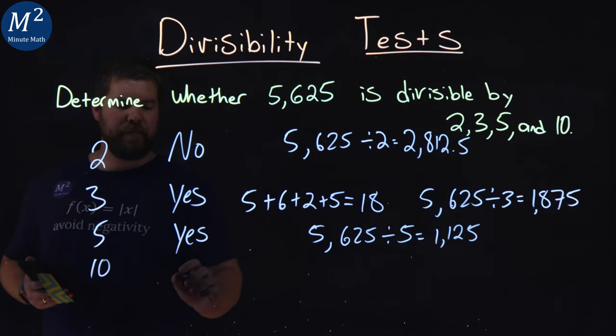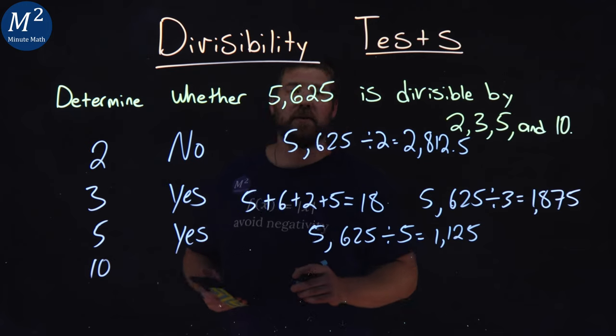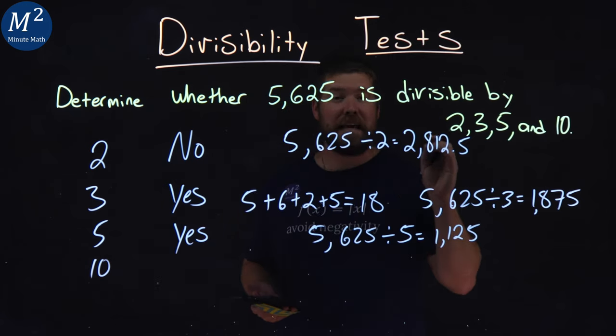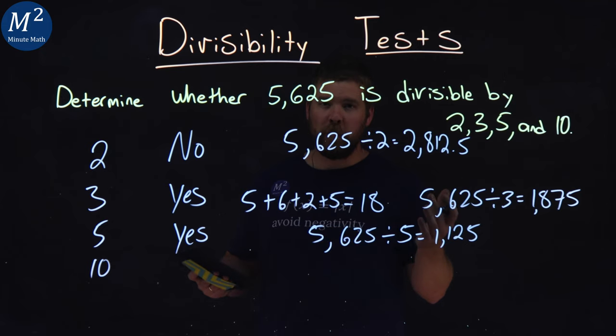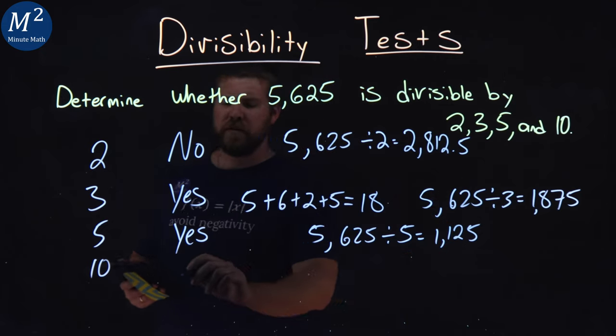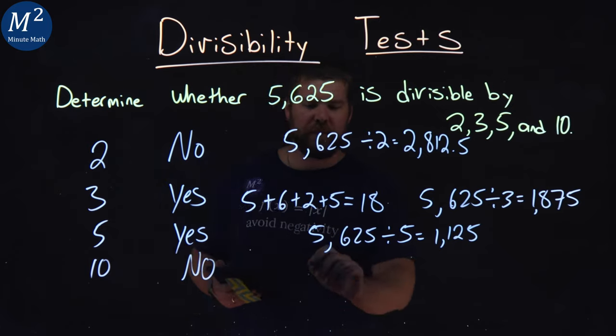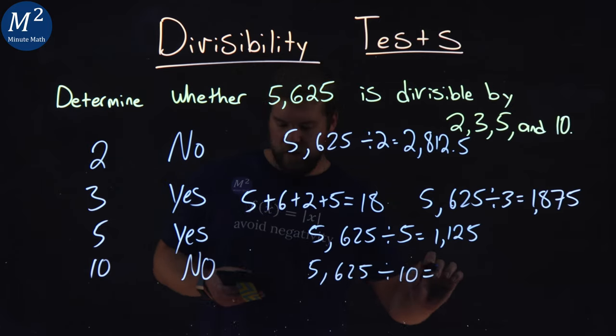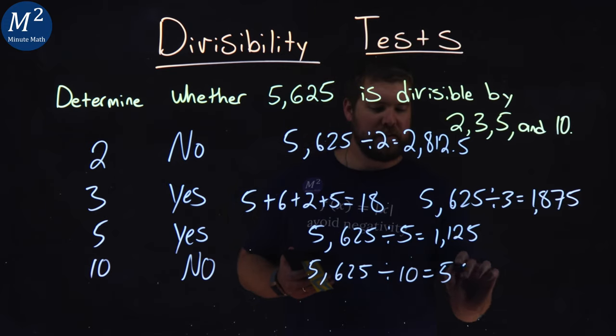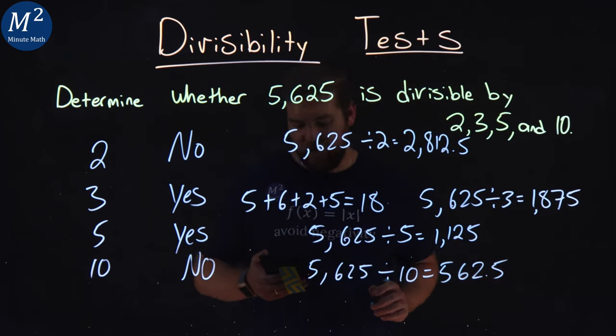And lastly, 10. Is 5,625 divisible by 10? Does it end in a 0? No, it ends in a 5. So the answer is no. It is not divisible by 10. And 5,625 divided by 10 is 562.5 right there.